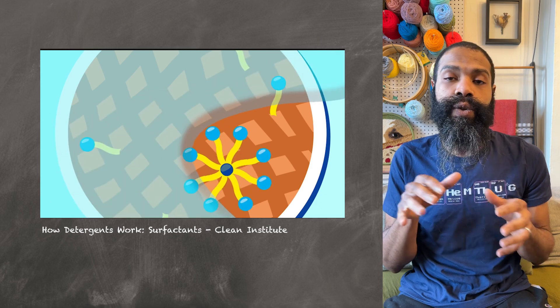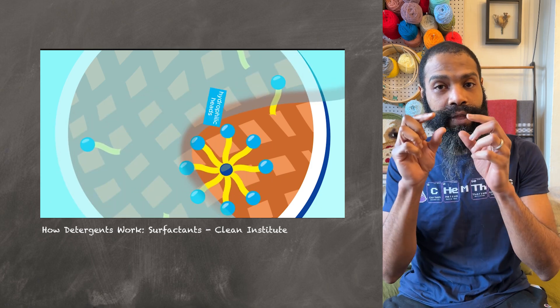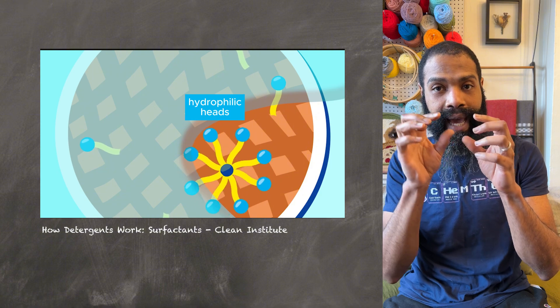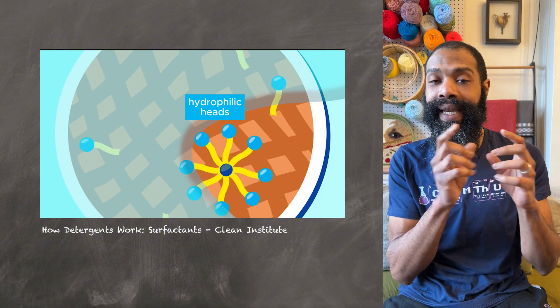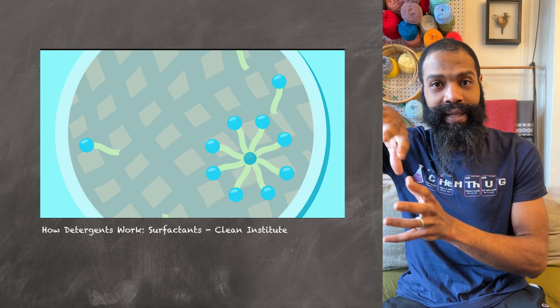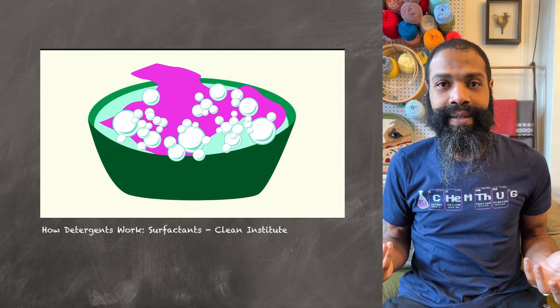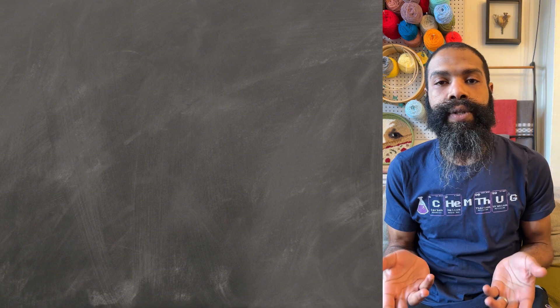And then once you introduce water, the water can't dissolve the grease in the oil bits, but that other part of the soap molecule, that other part that can hydrogen bond, it can dissolve in the water. So now when the water comes along, it picks it up and it carries it away. The dirt on your hands or your clothes, that is. So that is generally how soap works to clean things.